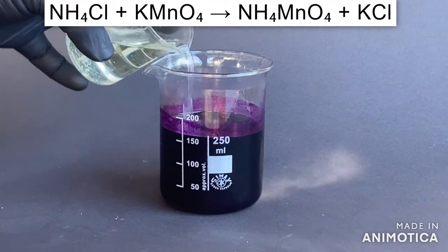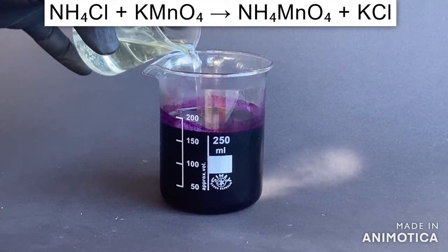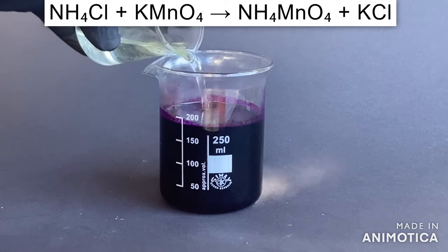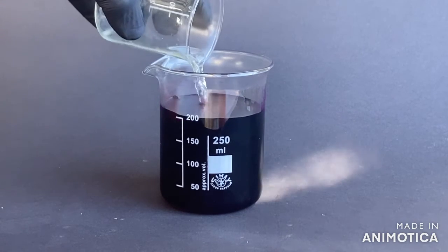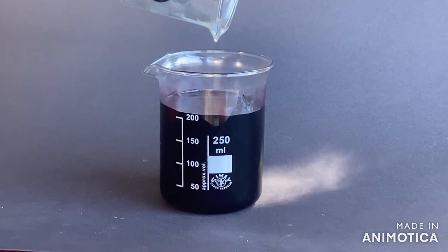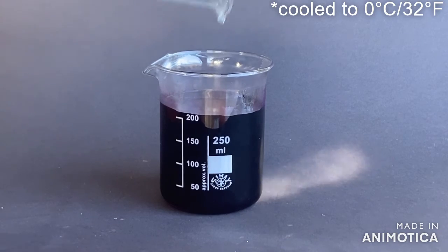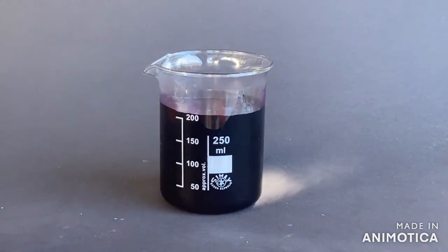The potassium permanganate reacts with ammonium chloride to form ammonium permanganate and potassium chloride. Now I will cool the beaker to around 0 degrees Celsius. Meanwhile I'll assemble filtration apparatus.